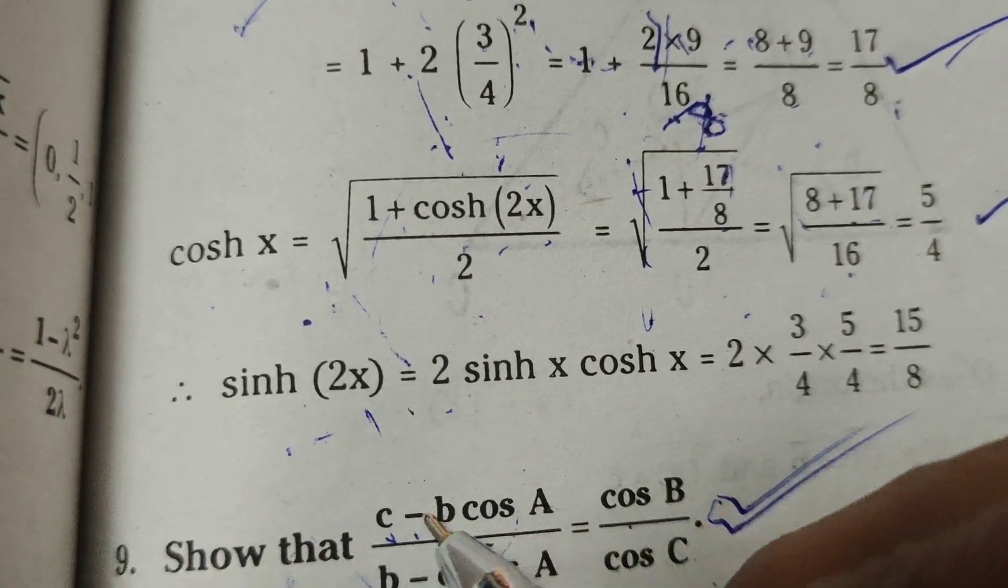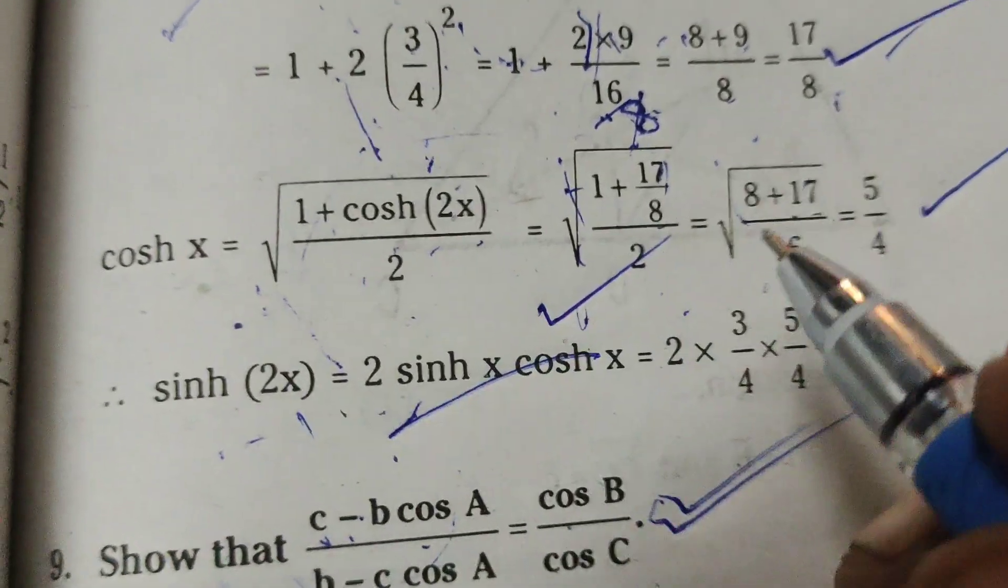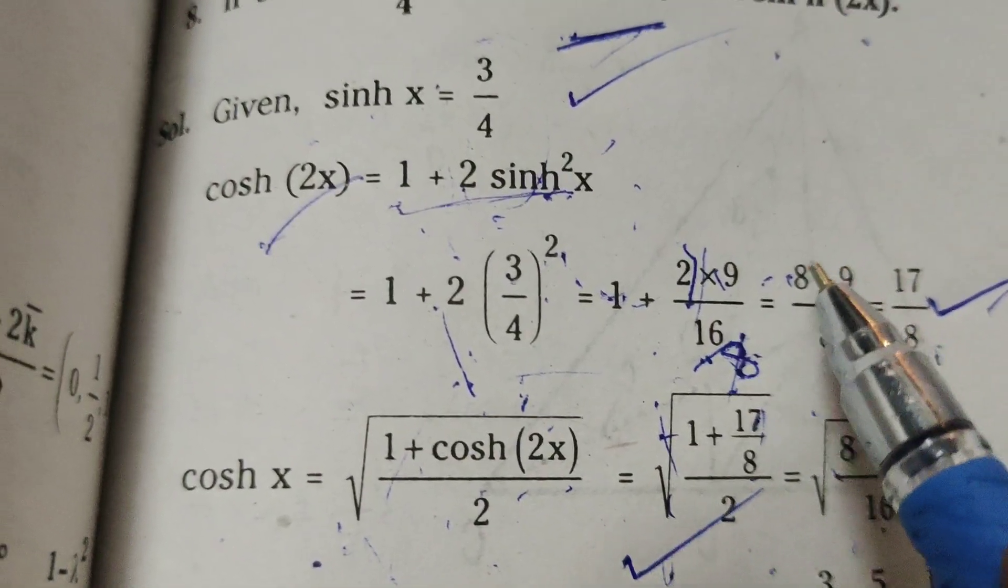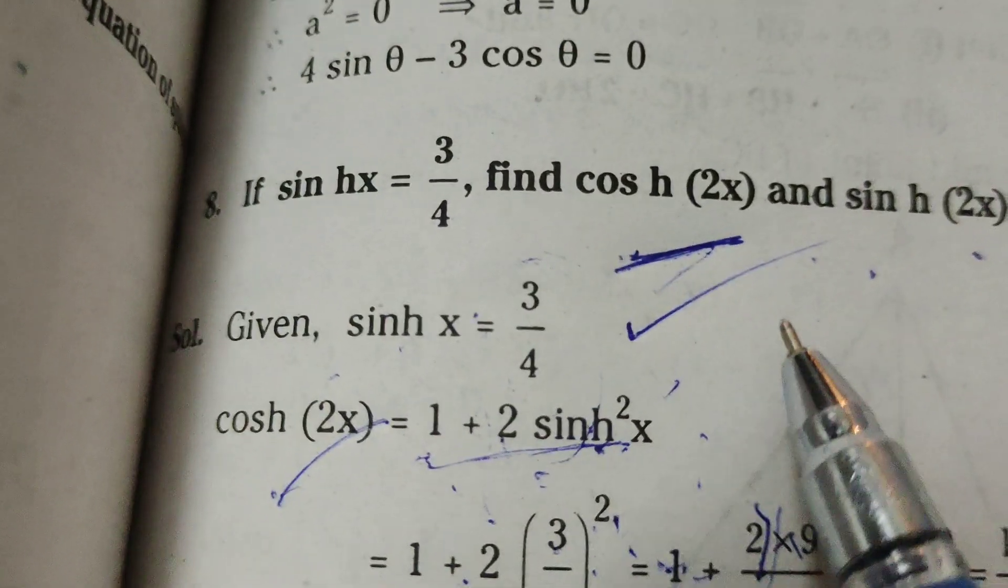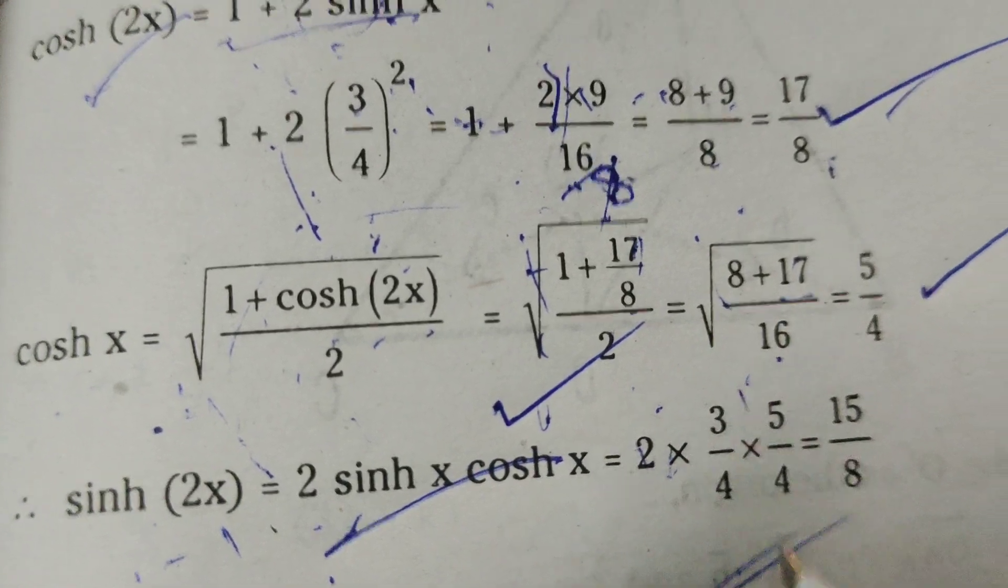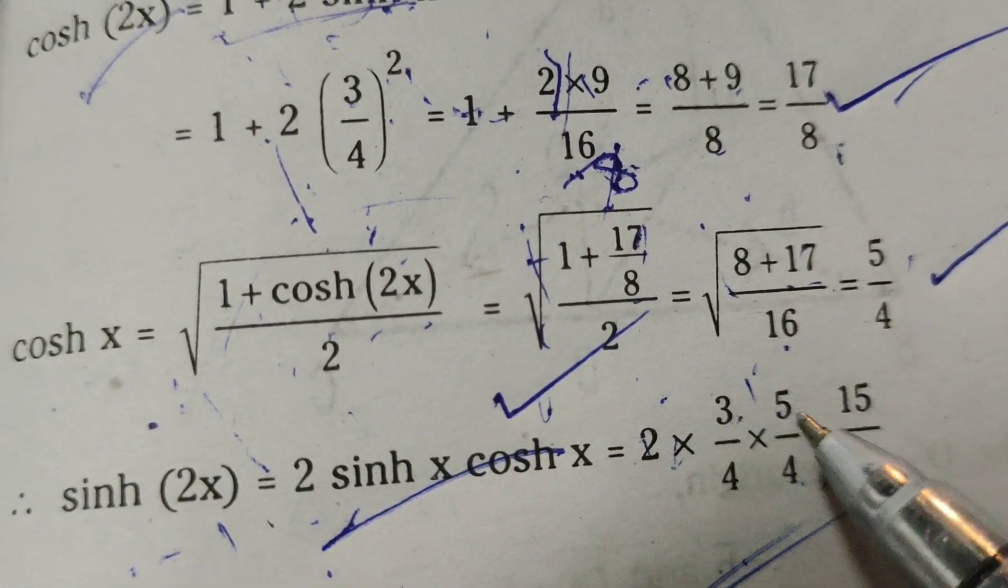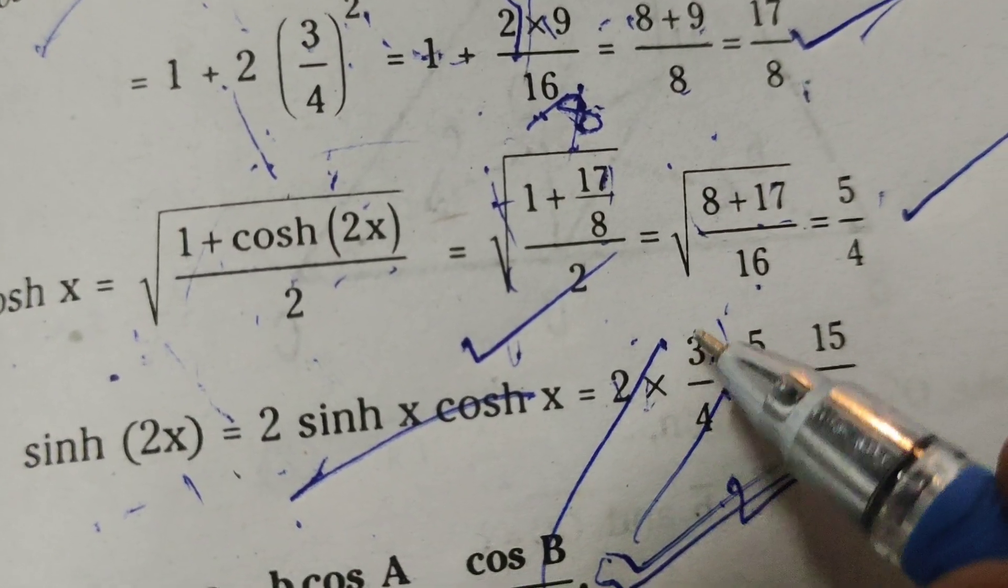Therefore, sinh(2x) equals, using the formula 2sinh(x)cosh(x), that's 2 times sinh(x) which is 3/4, times cosh(x) which is 5/4. That equals 15/8.